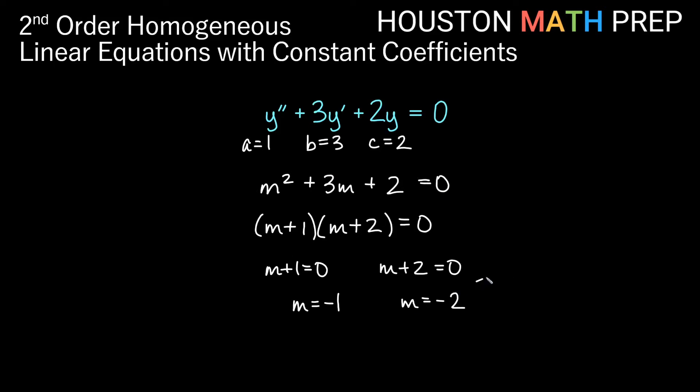Now remember what that told us. That told us then that y equals e to the mx is going to be a solution. So this here then tells us that y equals e to the negative x is a solution for this equation. It also tells us that y equals e to the negative 2x is a solution because we got m is negative 1 and m is negative 2. And remember that the general solution for this differential equation will just be some linear combination of both of these. So our general solution is going to be some constant multiple of one of these functions from the fundamental set of solutions plus some constant multiple of the other function from the fundamental set of solutions. So you can see just by knowing how to solve equations from algebra, we're actually able to solve a homogeneous linear equation with constant coefficients by changing it into a quadratic equation and solving for m.